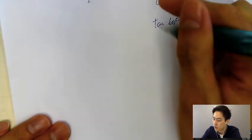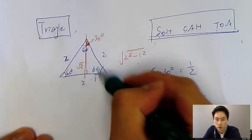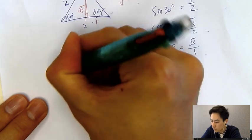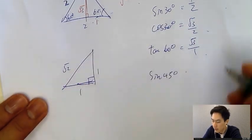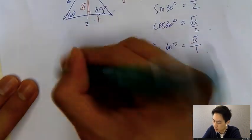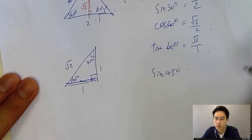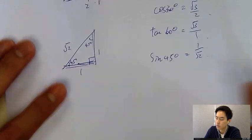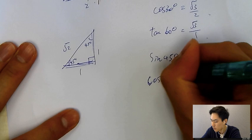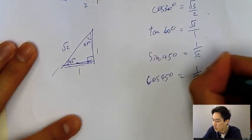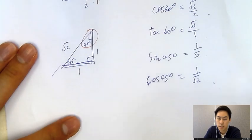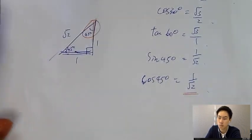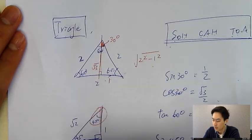For sine 45°, we need the second triangle: the 1-1-√2 isosceles right triangle. The right angle is 90°, and the other two angles are both 45° because the two legs are equal. So sine 45 = 1/√2 and cosine 45 = 1/√2. Whichever angle you use, you get the same answer.